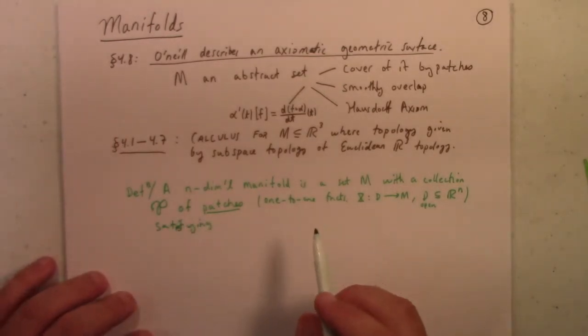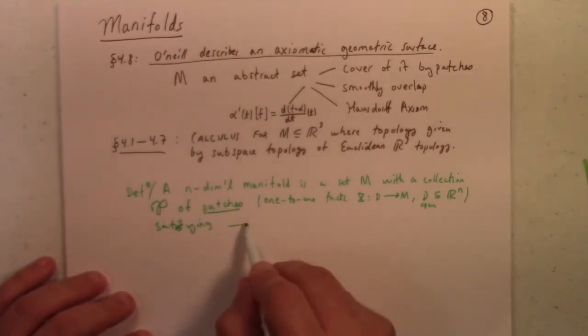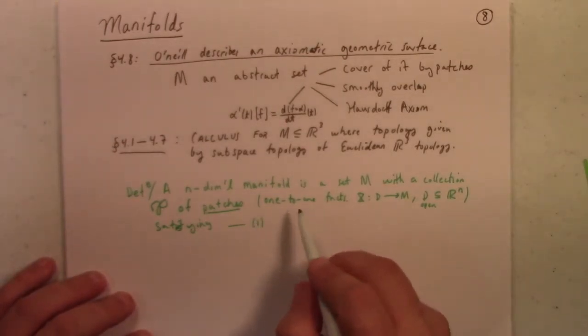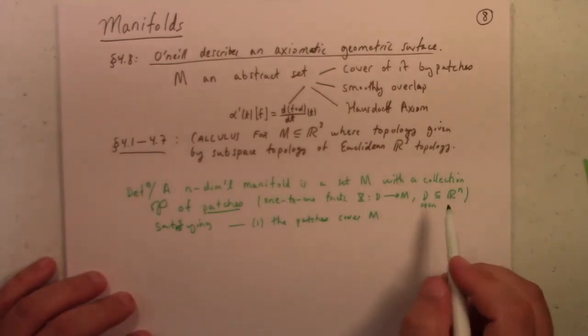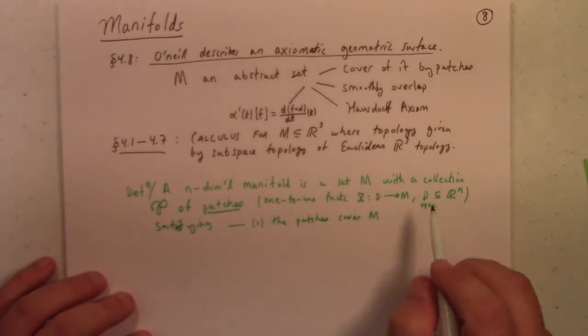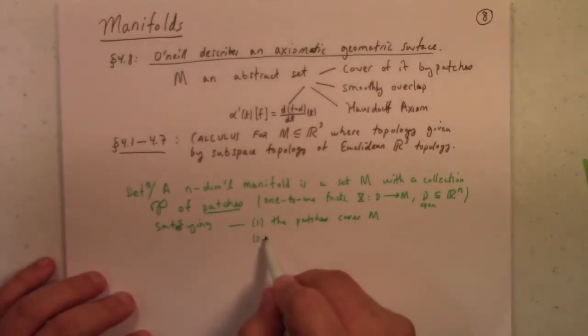What do they got? One covering property, the patches cover M. In other words, you take the union. If you take the union of the images, they cover M.